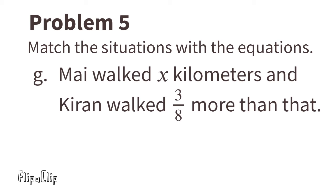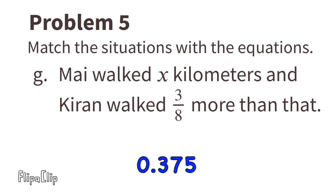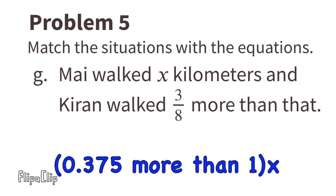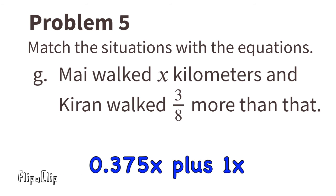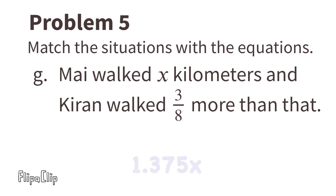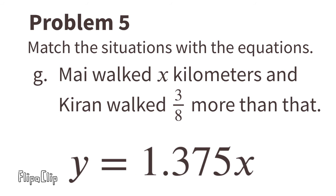Situation G: Mai walked x kilometers and Kieran walked three eighths more than that. Three eighths, or three divided by eight, equals 0.375. Kieran walked 0.375 more than Mai. One x represents Mai and 0.375x represents the extra Kieran walked. 0.375x plus one x equals 1.375x. The matching equation is y equals 1.375x.